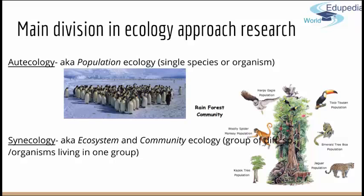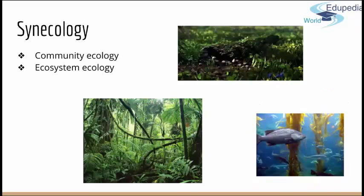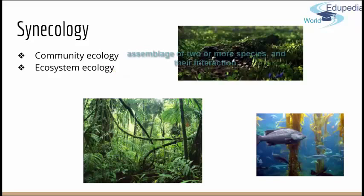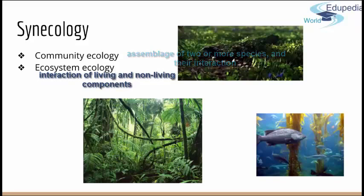So let's start by talking about synecology. Synecology has two sub-areas: community ecology and ecosystem ecology. Community ecology focuses on the processes driving interactions between different species and their overall consequences, while ecosystem ecology studies all organismal, population, and community components of the area, as well as the non-living counterparts.